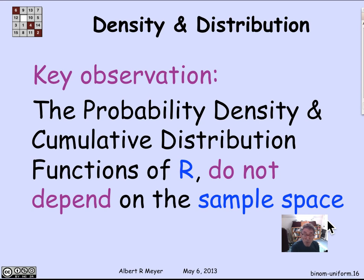If you're just looking at a random variable alone, essentially everything you need to know is given by its density or distribution functions — you don't have to worry about the sample space. This means that uniform and binomial distributions arising from different sample spaces will share a whole lot of properties, and everything derived from the PDF applies to all of them. That's why this abstraction of a random variable in terms of a probability density function is so valuable. But remember: the definition of a random variable is not that it is a probability density function — rather, it's a function from the sample space to values.